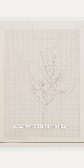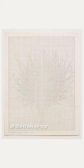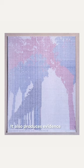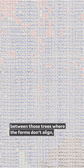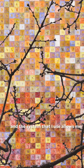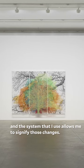I photographed a series of walnut trees and converted the form into numbers on a grid. That silhouette was then used to layer the shape of the trees on top of each other. It also produces evidence of the differences between the trees where the forms don't align, and the system that I use allows me to signify those changes.